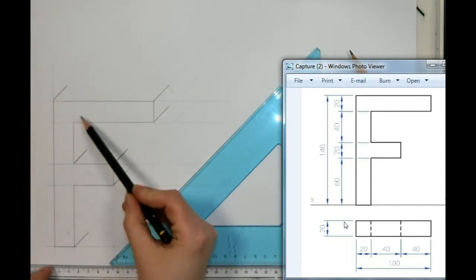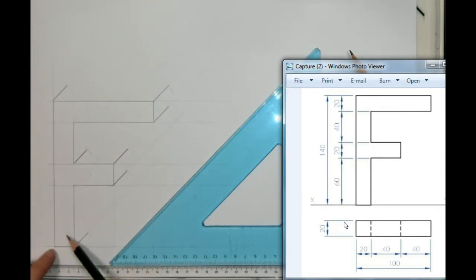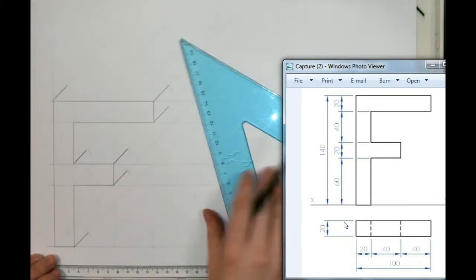Now, as you can visualize, we will not be able to see this line, this line, or this line. Okay? So we can leave them.